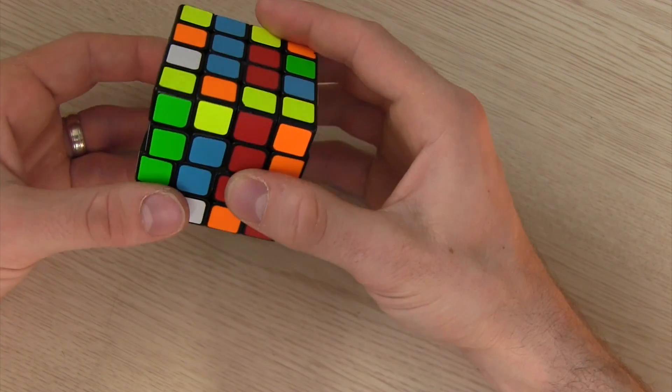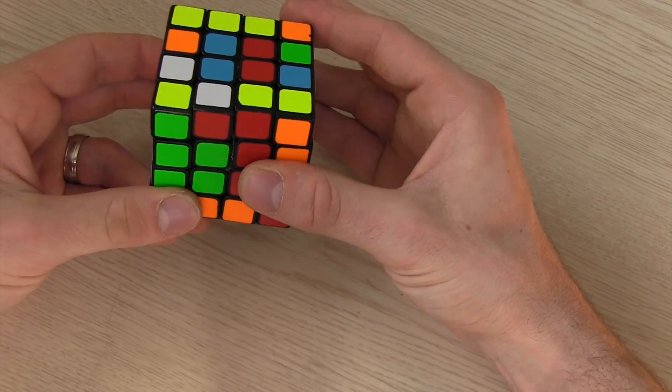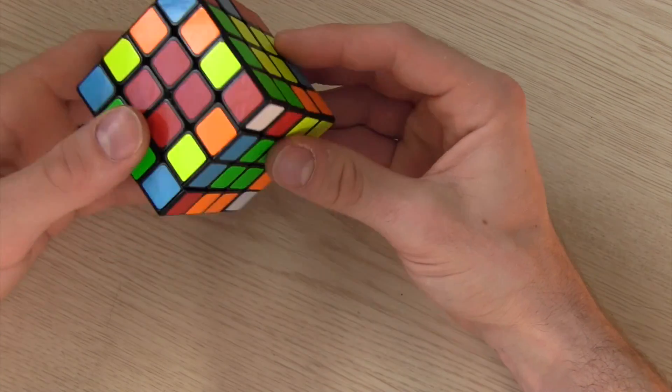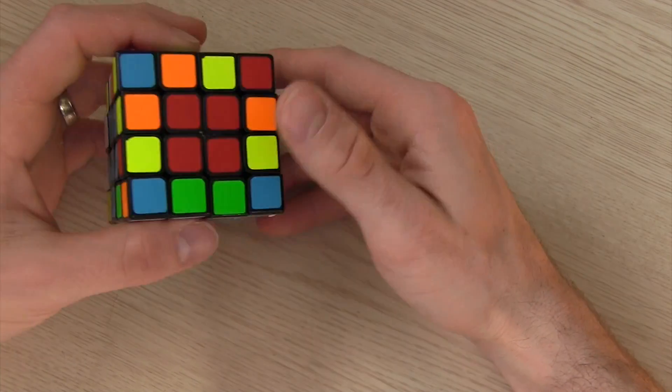So I'll turn that into place and then I have red and now when I have something like this I usually slice, turn, and slice. Now this is something that again may take a little bit of time but the more you mess around with it the easier they get.